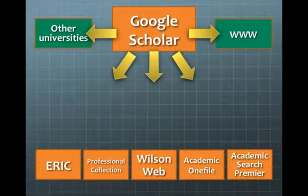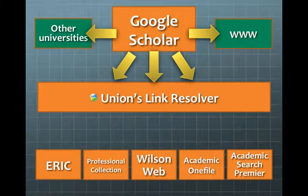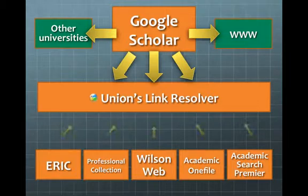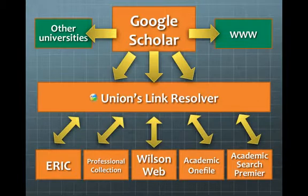One thing I want to point out is that Google Scholar communicates with Unions databases through the tool we saw earlier in the first screencast, which we call the Link Resolver. The Link Resolver is this piece of software that talks back and forth with all the databases. It's almost like the go-between between Google Scholar and the databases and helps determine if there is some availability of these articles within Unions databases.